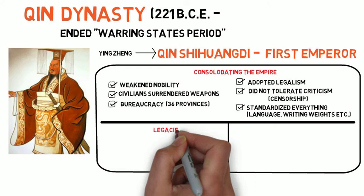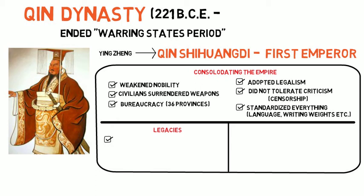To demonstrate his power, Qin organized two massive building projects. First was the Great Wall of China — more accurately, he added on to it and connected parts that had already been built by earlier dynasties. Second, and only recently discovered in 1974, was his Great Tomb. Construction on the tomb began during the Warring States period and continued for 35 years until Qin's death. Thousands of laborers were conscripted or forced to work on the tomb. Many of them were worked to death, and in order to keep the location of the tomb secret, any surviving workers were killed and buried with the emperor.